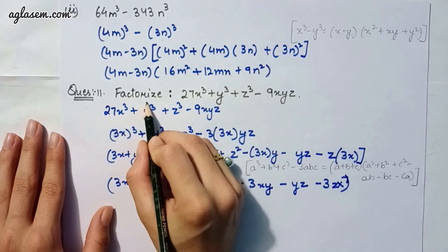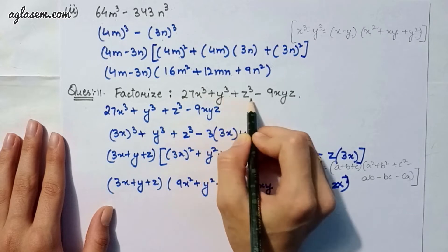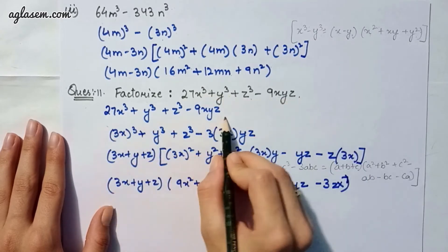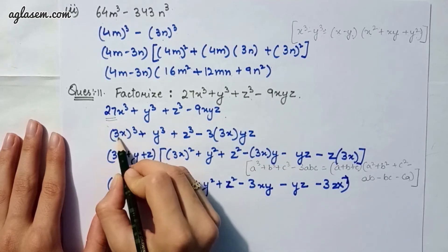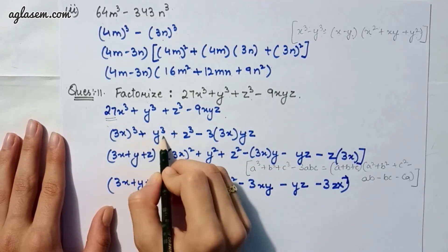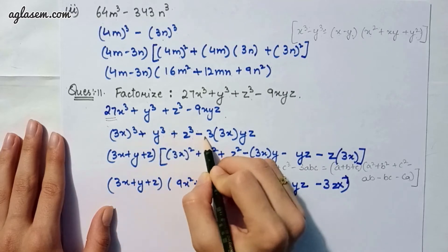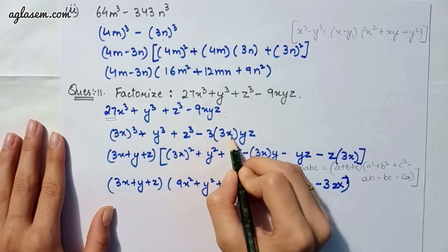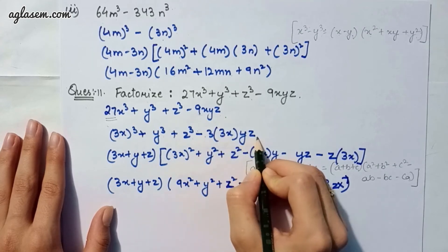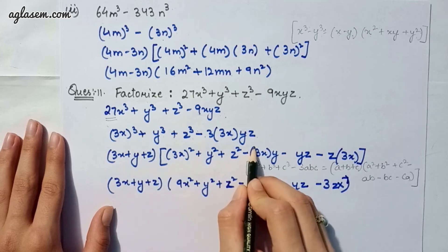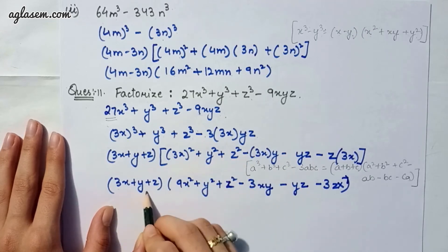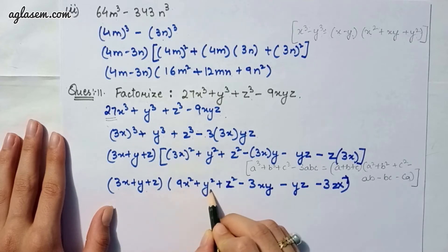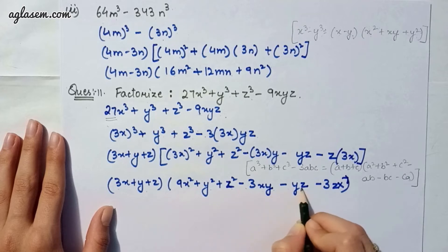Question 11: Factorize 27x³ + y³ + z³ - 9xyz. We write 27x³ as (3x)³. For -9xyz we can write it as 3·(3x)·(y)·(z). Solving this, the answer is (3x + y + z)(9x² + y² + z² - 3xy - yz - 3zx).